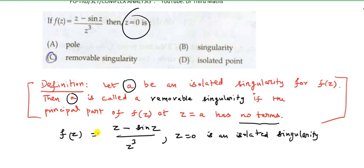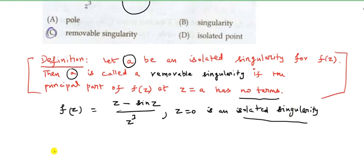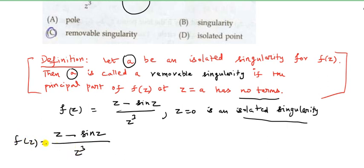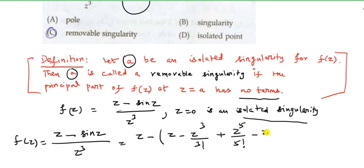z equal to 0 is an isolated singularity. We expand: z minus sin z divided by z cube, where sin z equals z minus z cube divided by 3 factorial plus z power 5 divided by 5 factorial minus z power 7 divided by 7 factorial.